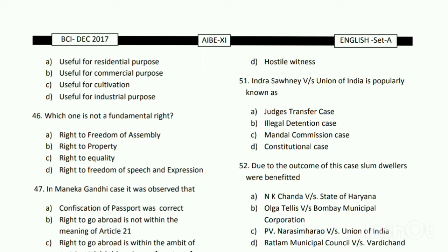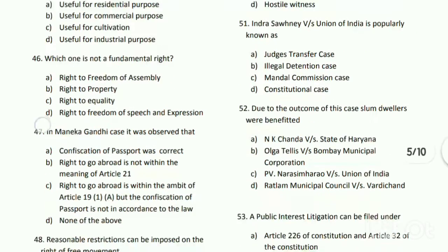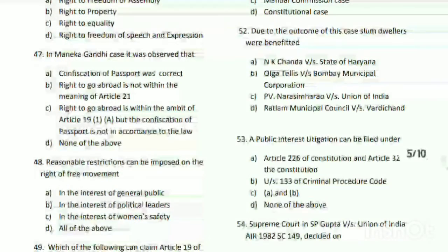Question number forty-six: which one is not a fundamental right? The options are right to freedom of assembly, right to property, right to equality, and right to freedom of speech and expression. The answer is B - right to property is no longer a fundamental right.